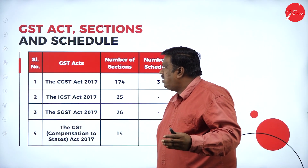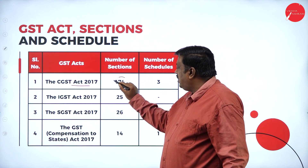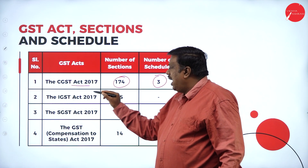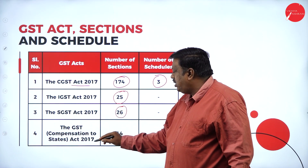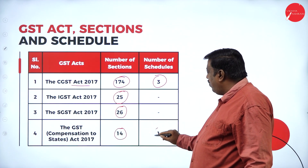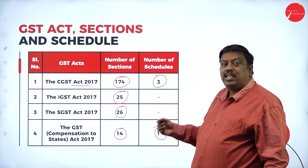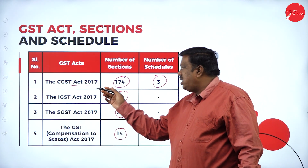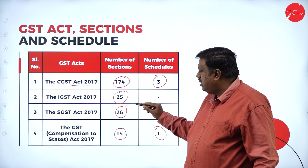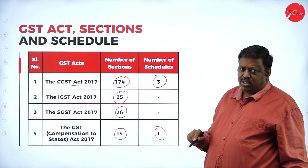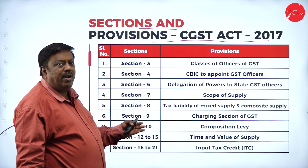Moving to the GST Act sections and schedules: the CGST Act 2017 has a total of 174 sections and 3 schedules. The IGST Act 2017 has 25 sections, the SGST Act has 26 sections, and the GST Compensation Act has 14 sections. Remember this carefully for your examinations.